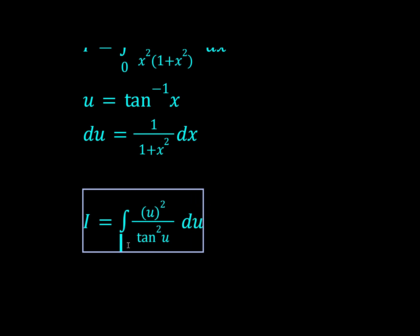And the bounds? Well, the bottom bound will be tan inverse 0, which is just 0, and the top bound was tan inverse infinity, which would be pi over 2.